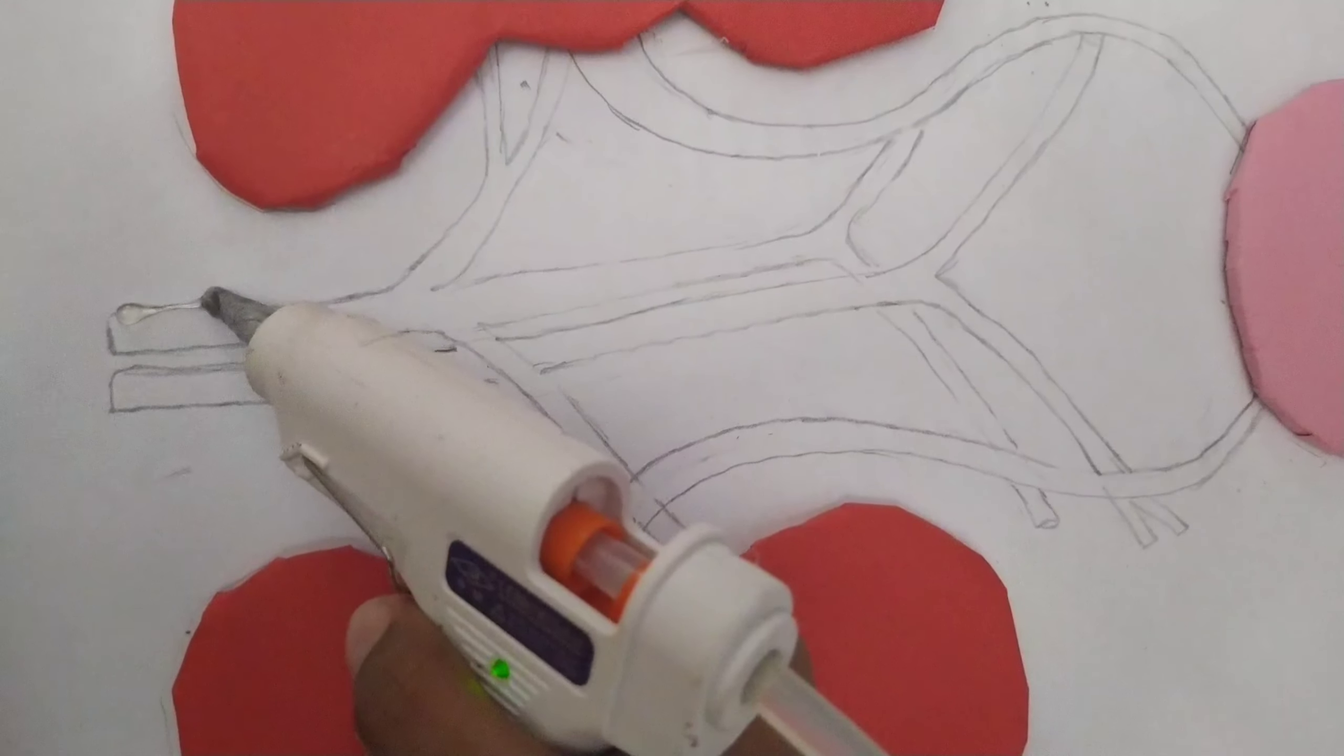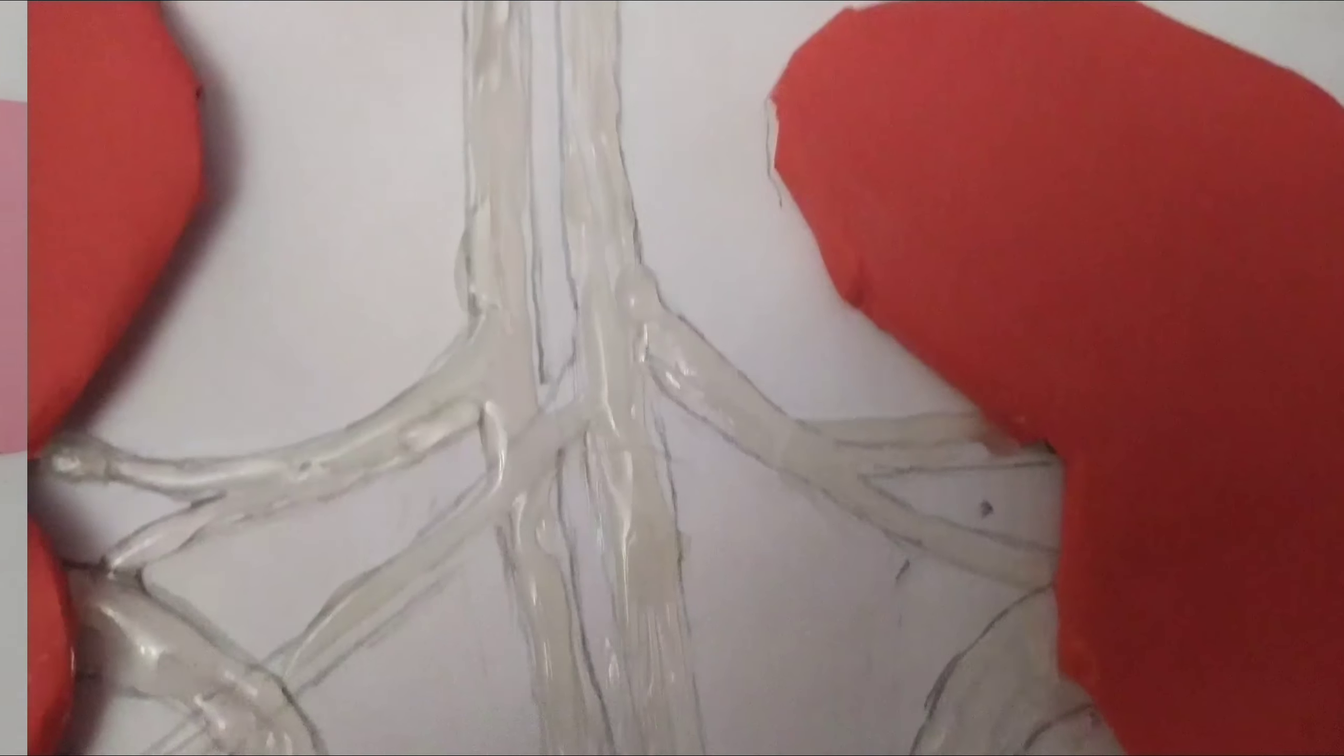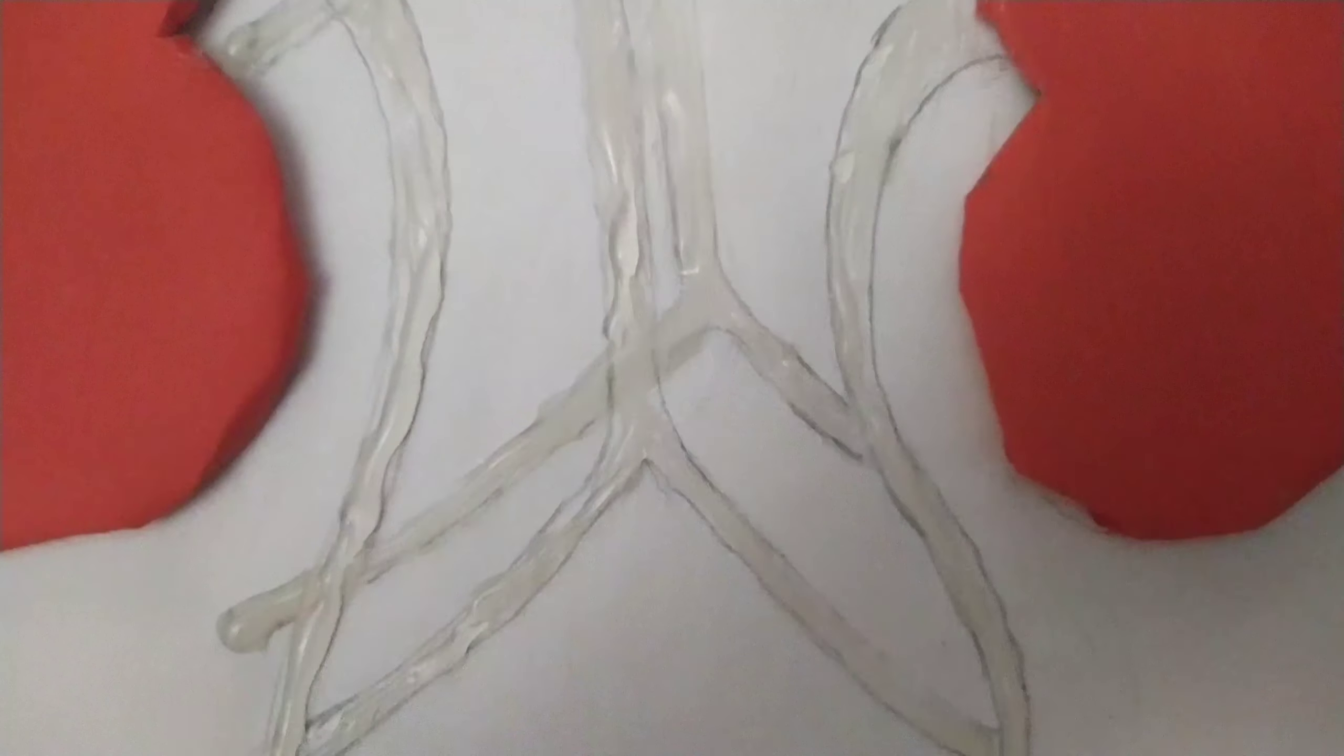Now to give it a 3D effect, take your glue gun and apply glue all over the connecting lines. There, our vena cava, ureter and urethra got a 3D look.